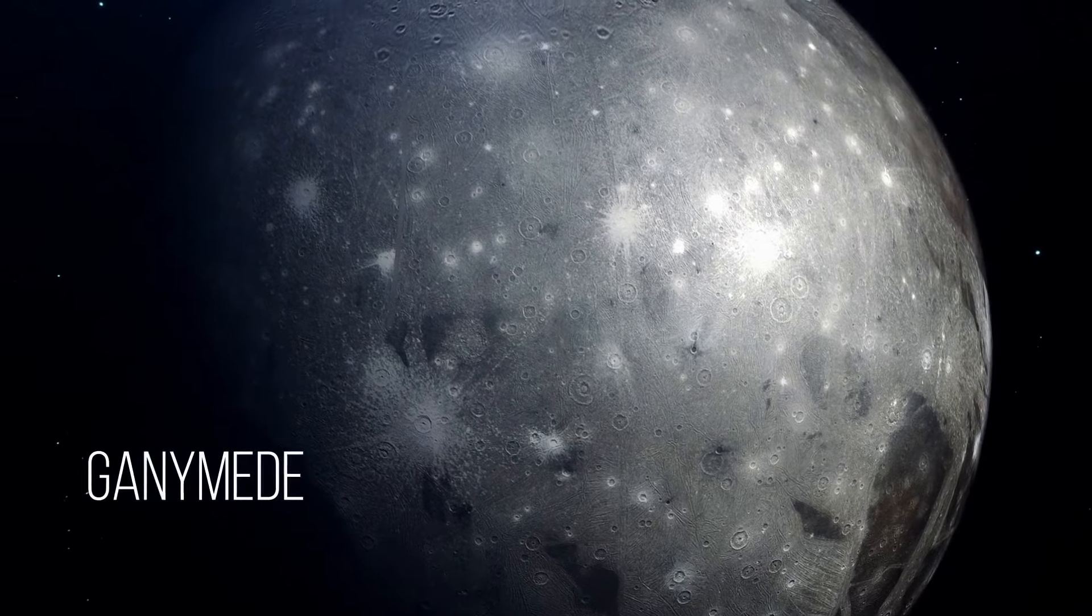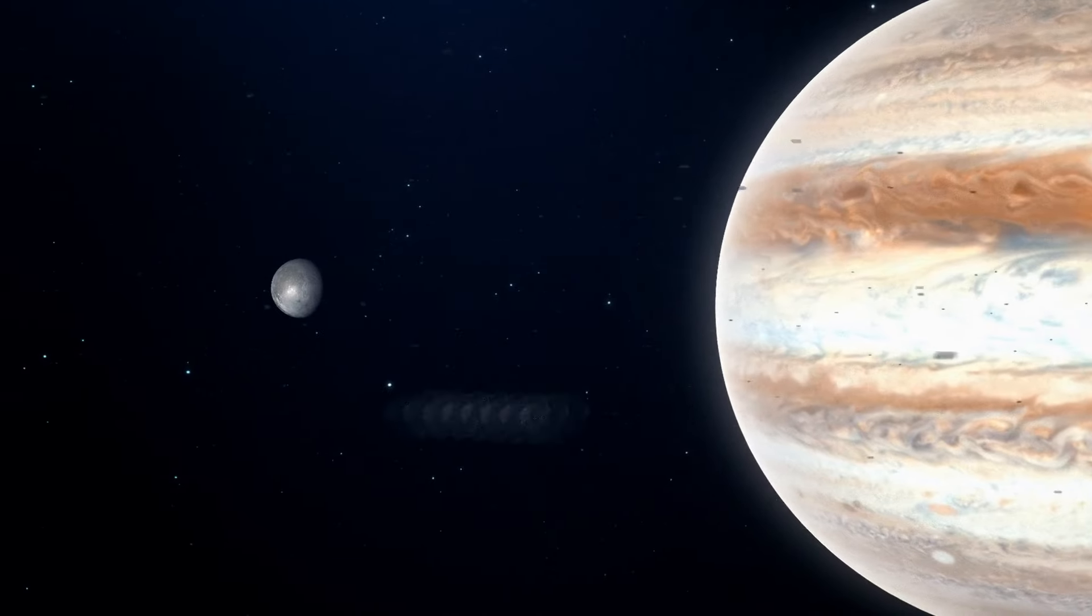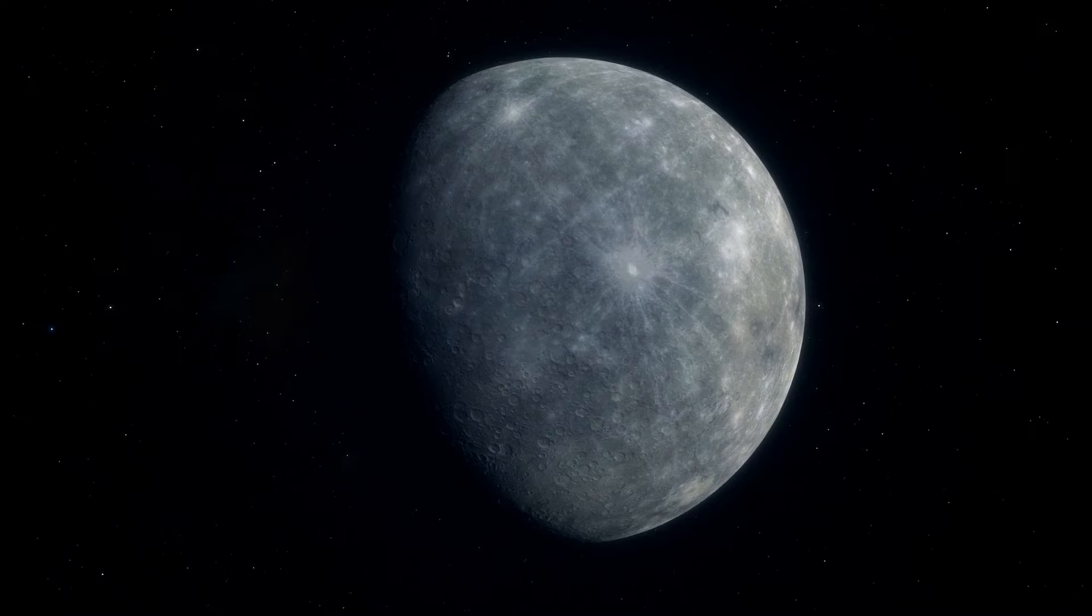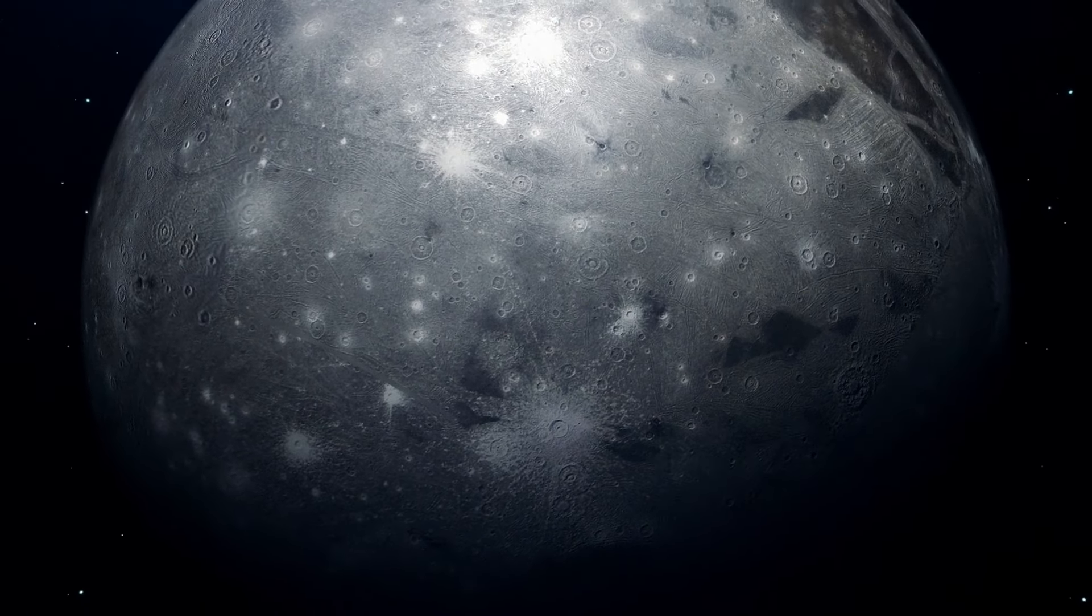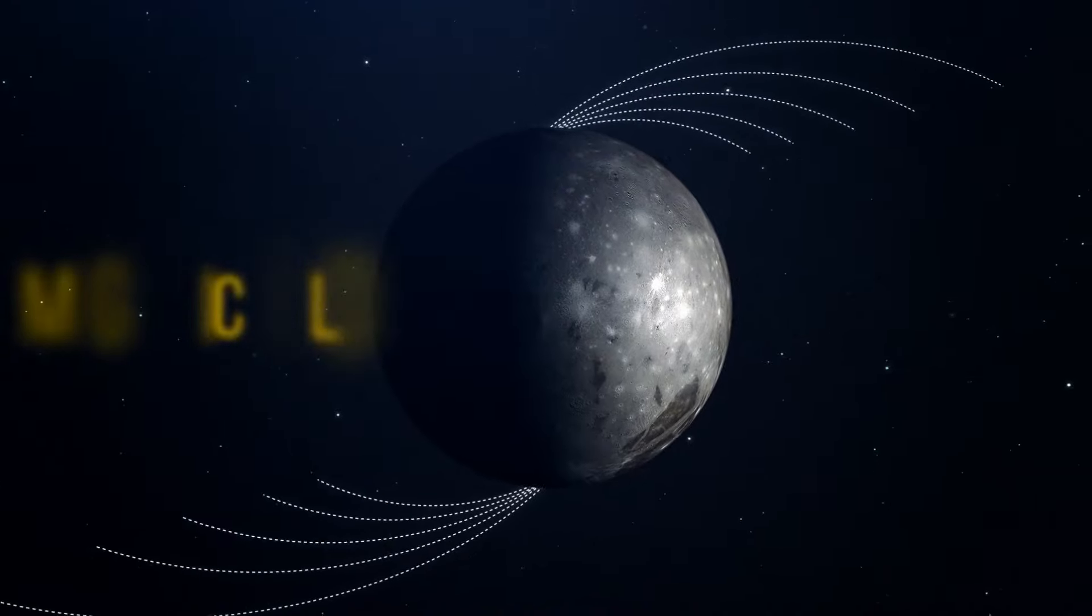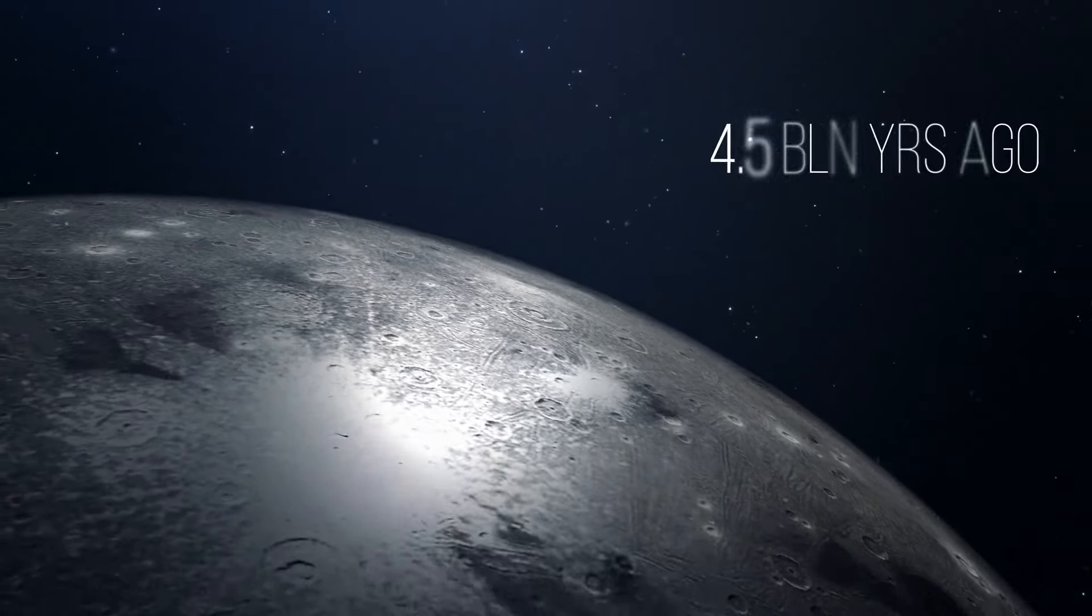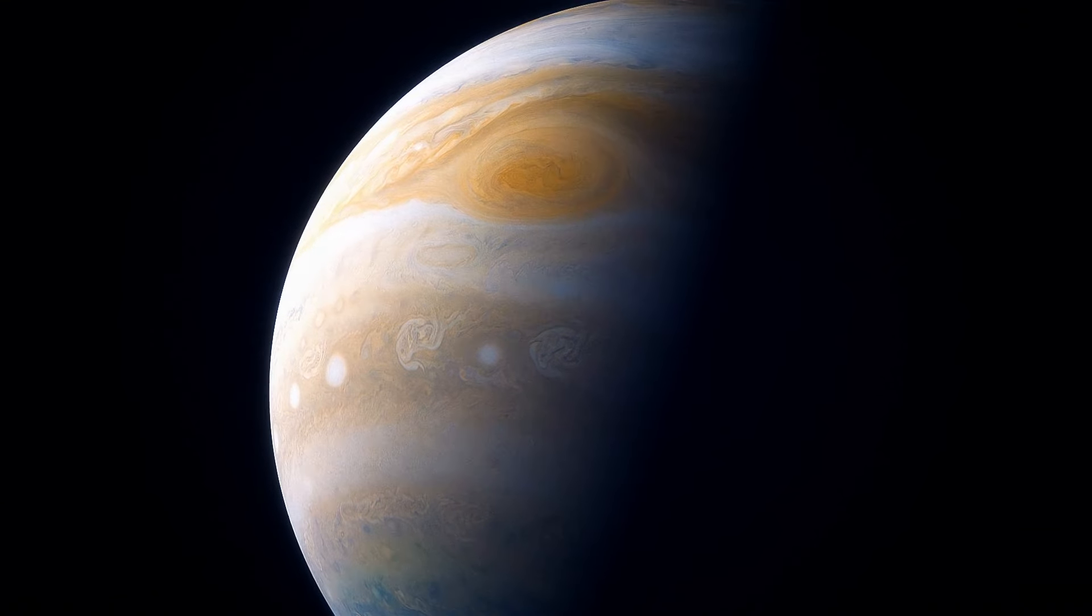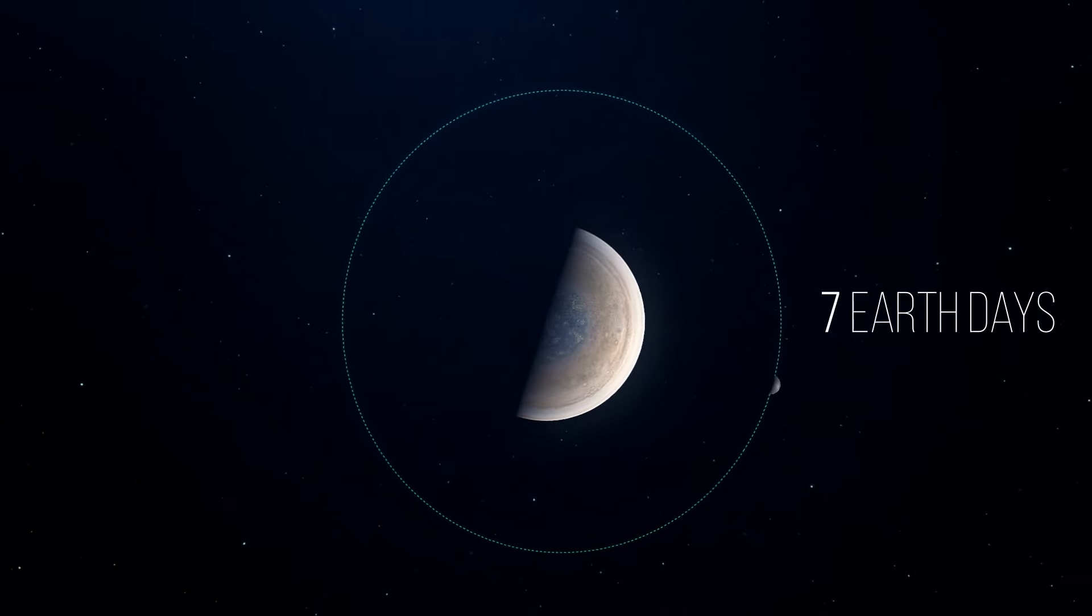Ganymede is Jupiter's largest moon and the biggest moon in our solar system. If this space body didn't orbit around Jupiter, it would be classified as a planet. It's even bigger than Mercury and Pluto. What makes this moon stand out, among others, is the fact that it has its own magnetic field. The moon was born around 4.5 billion years ago. It means it's as old as Jupiter itself.